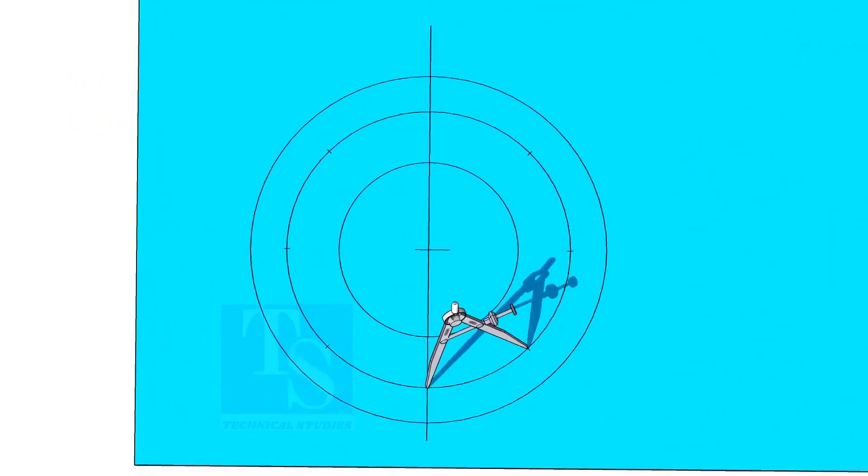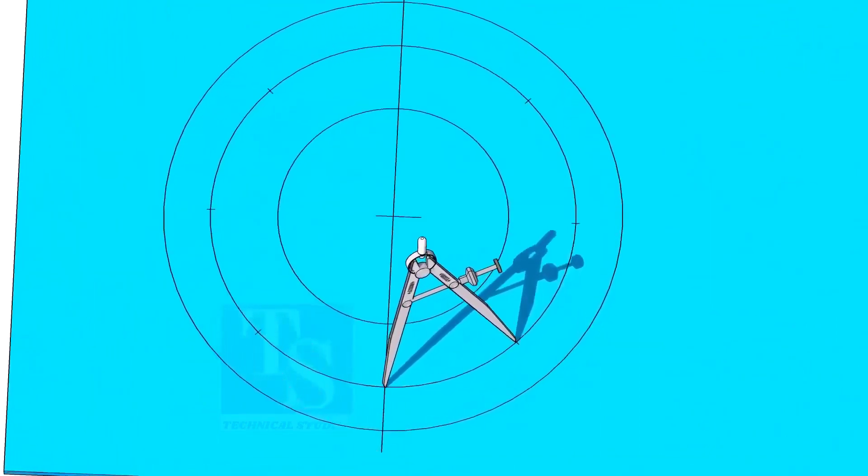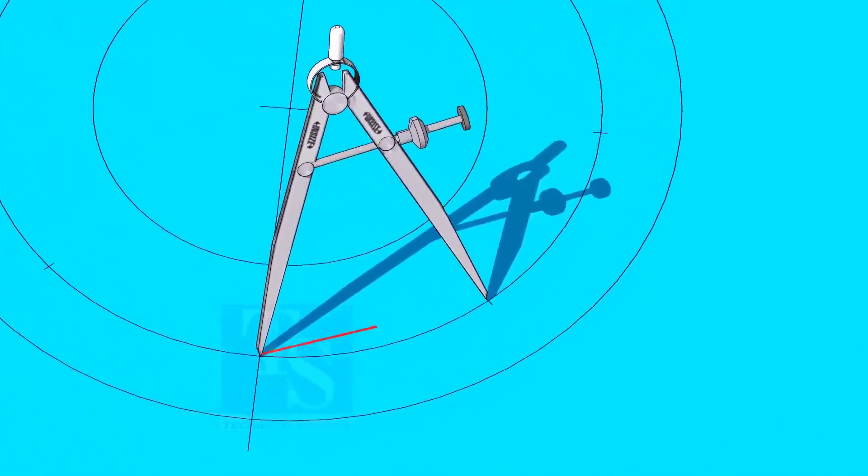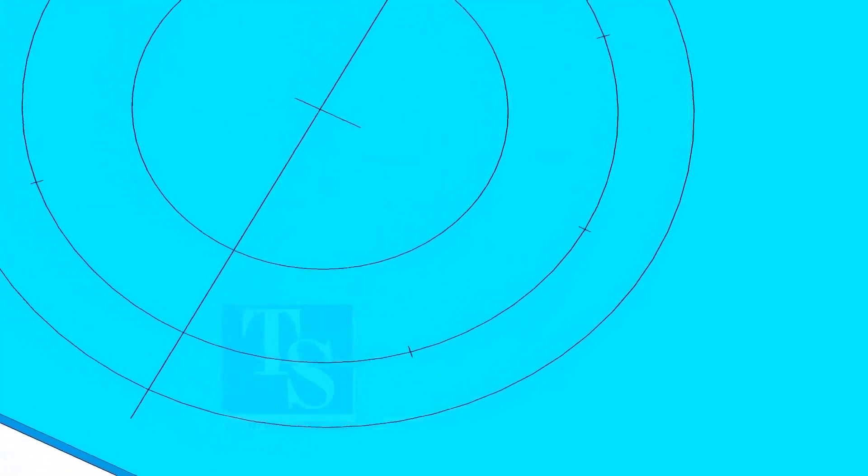Adjust the divider to 192.8 millimeters and divide the PCD into 8 parts. Dividing the circle is not an easy job. It requires good practice. Make sure the last segment is as same as the other segments.